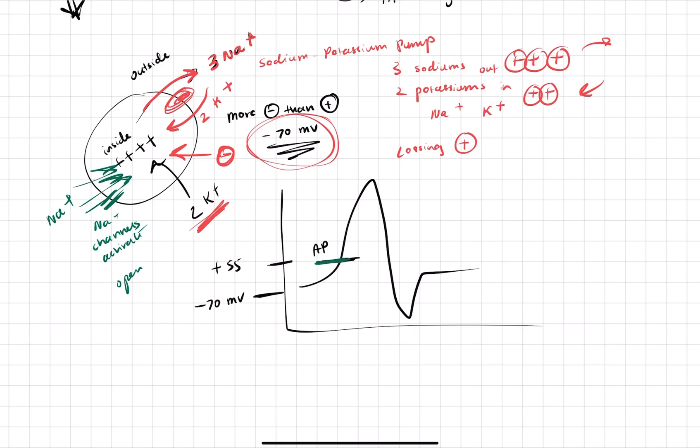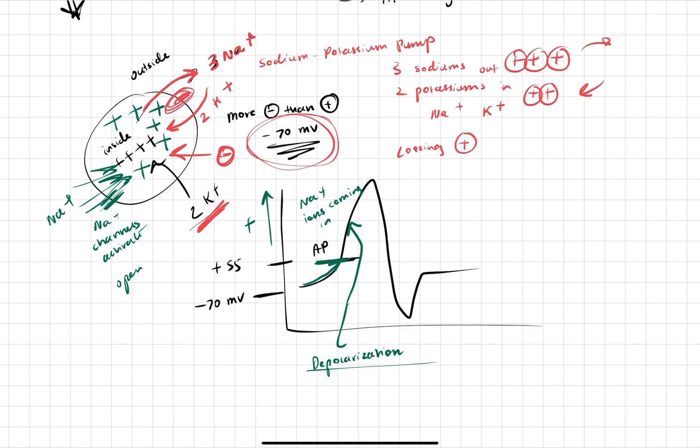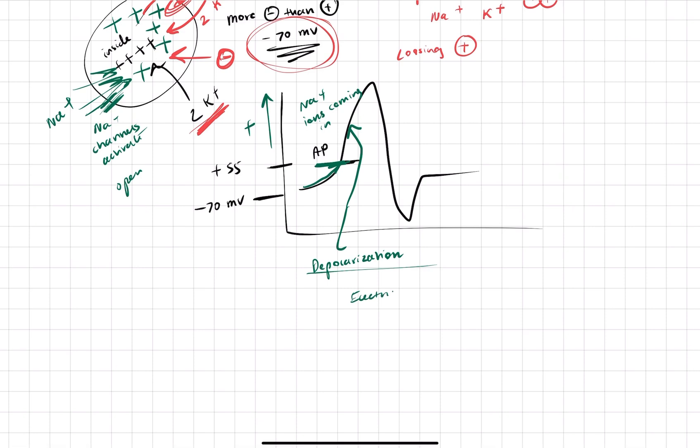They're going to activate and they're going to open. So we're going to get some flooding of sodium in here. So right here, when we're starting to get positive, that's because we have sodium ions coming in. And as we're getting the sodium ions coming in, this whole thing is going to be more positive. And that whole process, which is happening right here, becoming more positive, is called depolarization. And when this depolarization occurred, we are triggered to send an electrical signal down the axon. So electrical signal gets sent down the axon of the neuron.